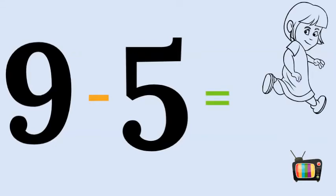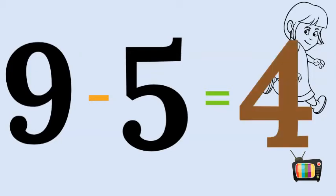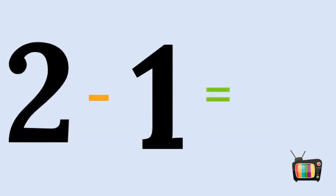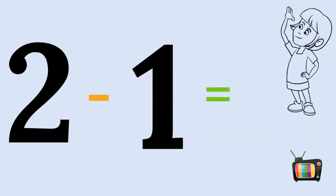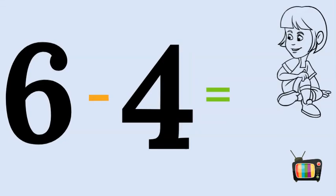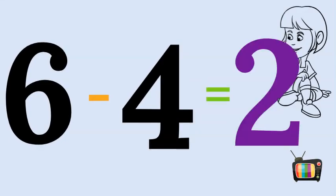9 minus 5 equals 4. 9 minus 9 equals zero.